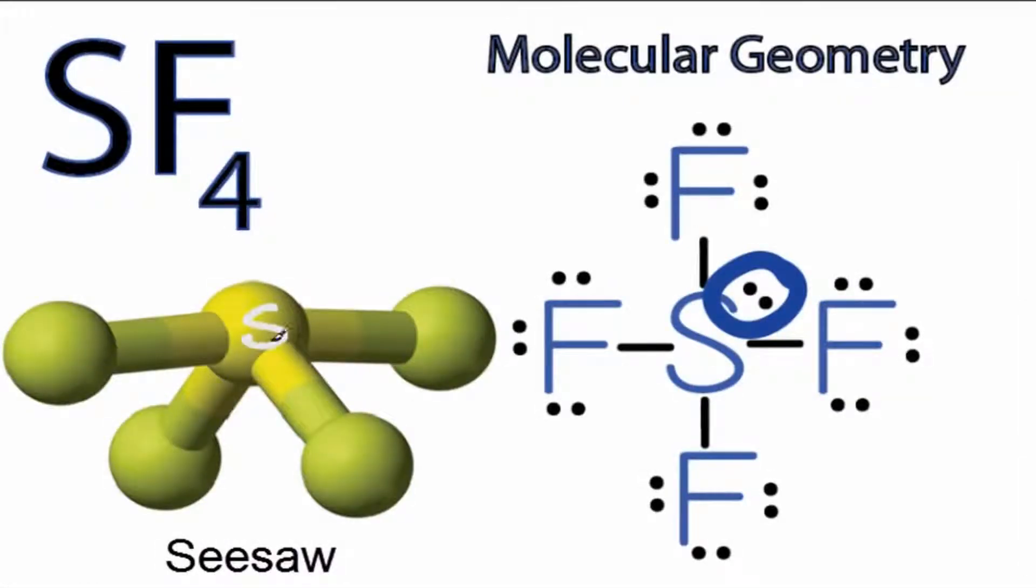We have the sulfur in the center, and then our fluorines on the outside, around it. So that's very different than the tetrahedral structure that we were talking about. And when you look at the structure, the lone pair electrons are right there, and you can see them forcing the fluorines down, in accordance with valence shell electron pair repulsion theory.